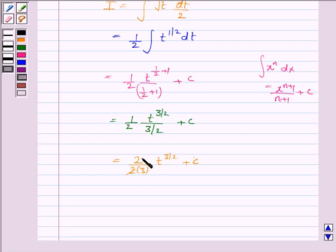2 gets cancelled with 2, and this is 1 by 3. t is sin 2x, so substitute it. It is sin 2x to the power 3 by 2 plus c.